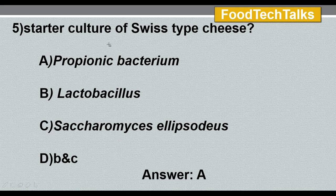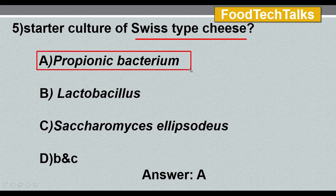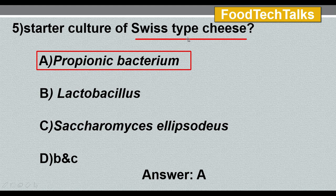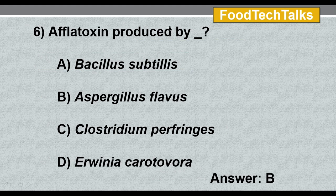Fifth question: starter culture of Swiss type cheese — options: A) Propionibacterium, B) Lactobacillus, C) Saccharomyces ellipsoideus, D) both B and C. The answer is option A, Propionibacterium. Swiss cheese is a hard cheese containing 25 to 36% moisture. It is bacterially ripened and contains gas holes, because the bacteria produce gases such as CO2 which gradually escape from the cheese, leaving behind those characteristic holes.